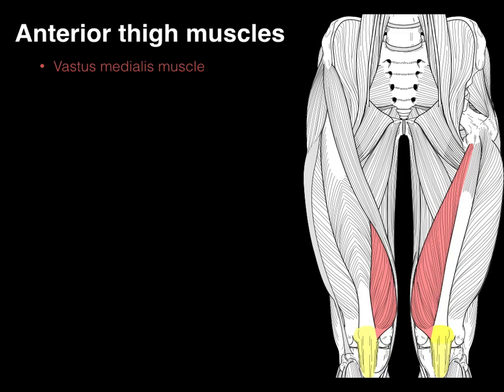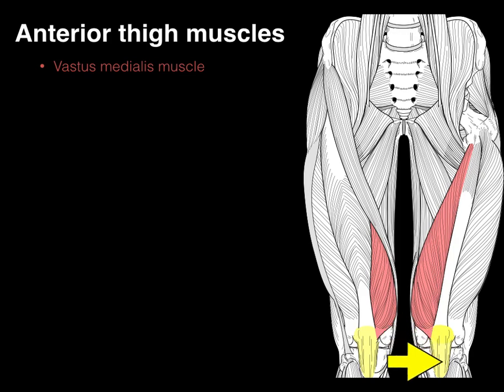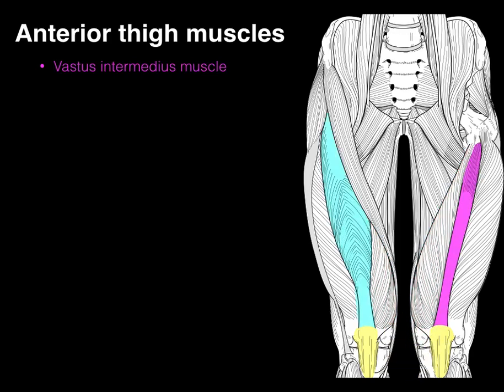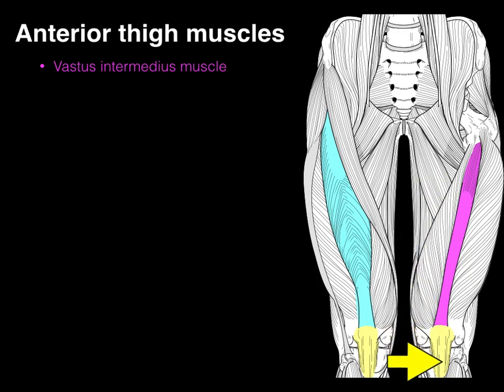The vastus medialis arises from the linea aspera on its posterior surface, courses down, its tendon engulfs the patella, and inserts on the tibial tuberosity. Deep to the rectus femoris — visible only on the left side of the dissection — is the vastus intermedius, a large muscle between the vastus medialis and lateralis. It arises from the front of the femur, its tendon engulfs the patella, and inserts on the tibial tuberosity.